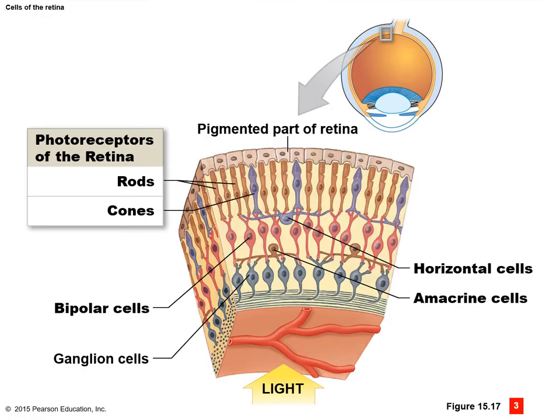Here we can see an excellent diagram of the neural part of the retina showing the direction that light travels. Light goes in and hits the back where the pigmented part of the retina is. Information then travels from the pigmented retina through the photoreceptors to the bipolar cells and then to the ganglion cells. Horizontal cells and amacrine cells help with image processing. We can also see the difference between the rods and cones — rods being long and slender, and cones being a little shorter, fatter, and having a more cone-like shape at the top.